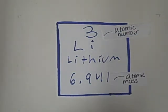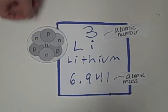To get the atomic mass of neutrons, if a decimal, you would round to the nearest whole number and subtract by the atomic number. So lithium would have 3 protons and 4 neutrons.